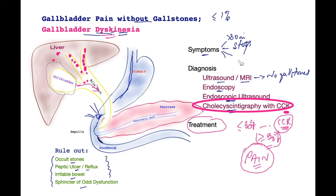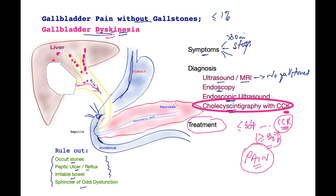The treatment is removal of the gallbladder by a laparoscopic procedure called laparoscopic cholecystectomy. In this procedure the gallbladder is removed and clips are applied to the duct that connects to it. If the correct sequence of diagnosis is followed, a high percentage of patients will derive benefit. However, despite best intentions, between 20 to 30% of patients may have recurrence of symptoms. Reproduction of the pain with either CCK or a fatty meal gives a very high likelihood of surgical success.